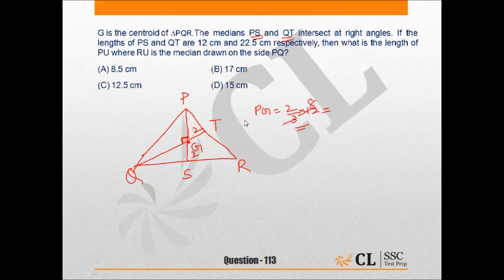So it would be 8 cm, so length of PG is 8 cm, and it would be 4 cm. Similarly, QG would be 15 cm and GT would be 7.5 cm. Now what is the length of PU, where RU is the median drawn on the side PQ, and the median RU is also drawn, it is RU, okay? And length of PU is asked.